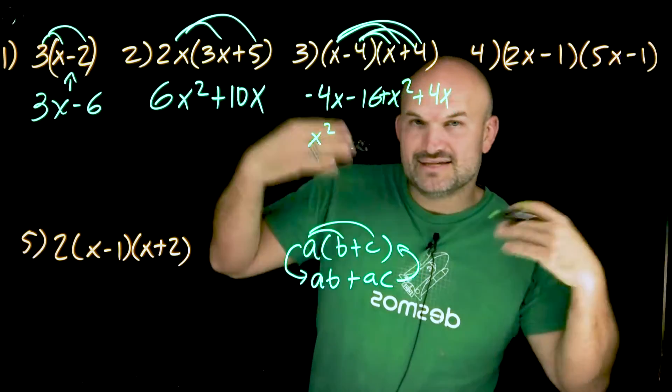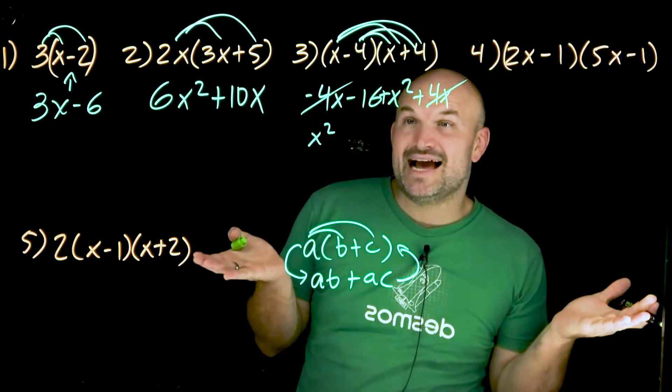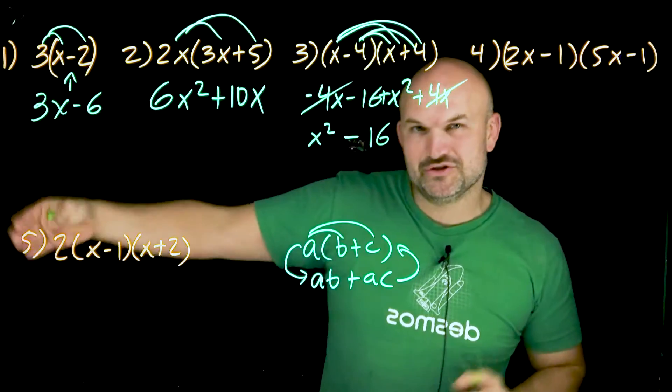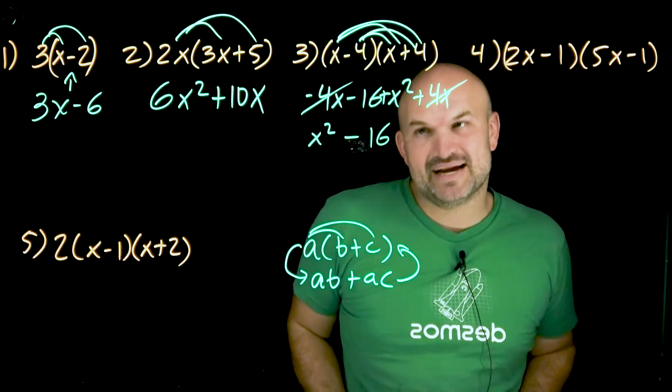What about my X's? Well, negative four X and positive four X, those are going to add to zero. So I don't have any X terms. And then I have a negative 16. That looks very similar to that example I showed you with those little boxes. Remember the X squared minus one. This is going to be an X squared minus 16.